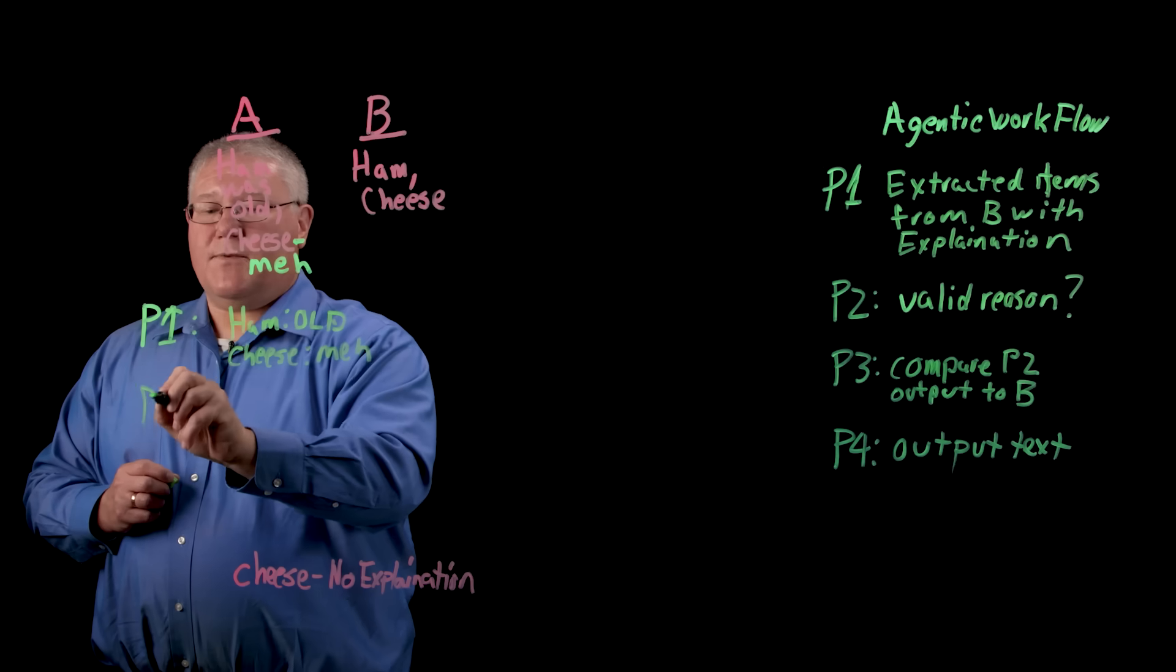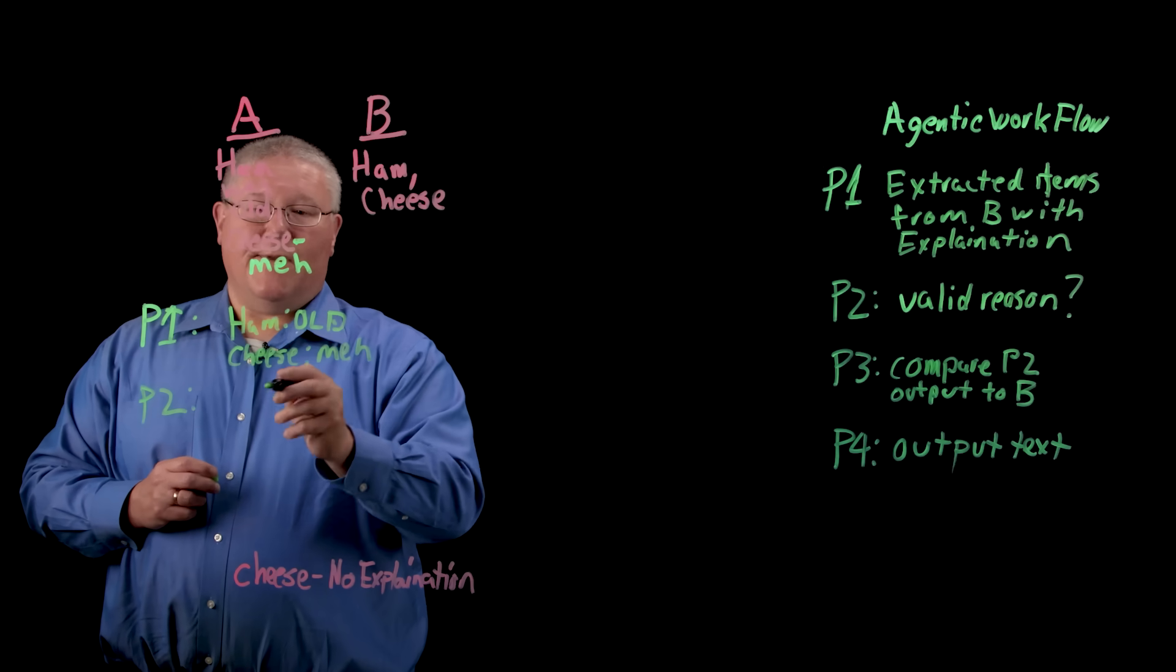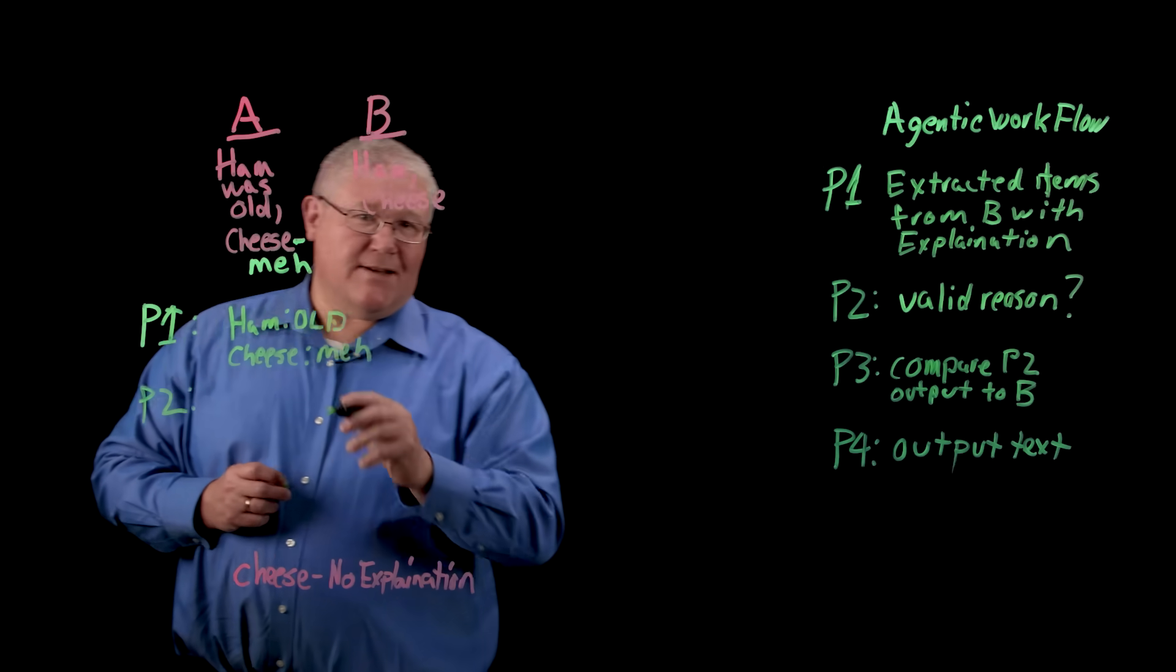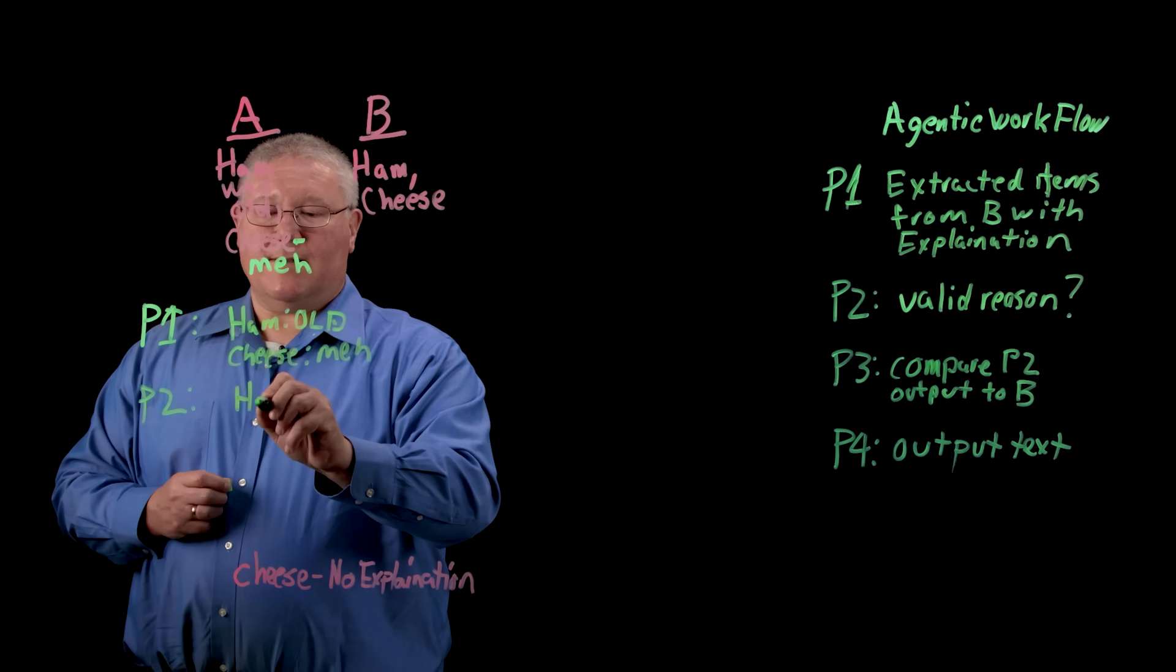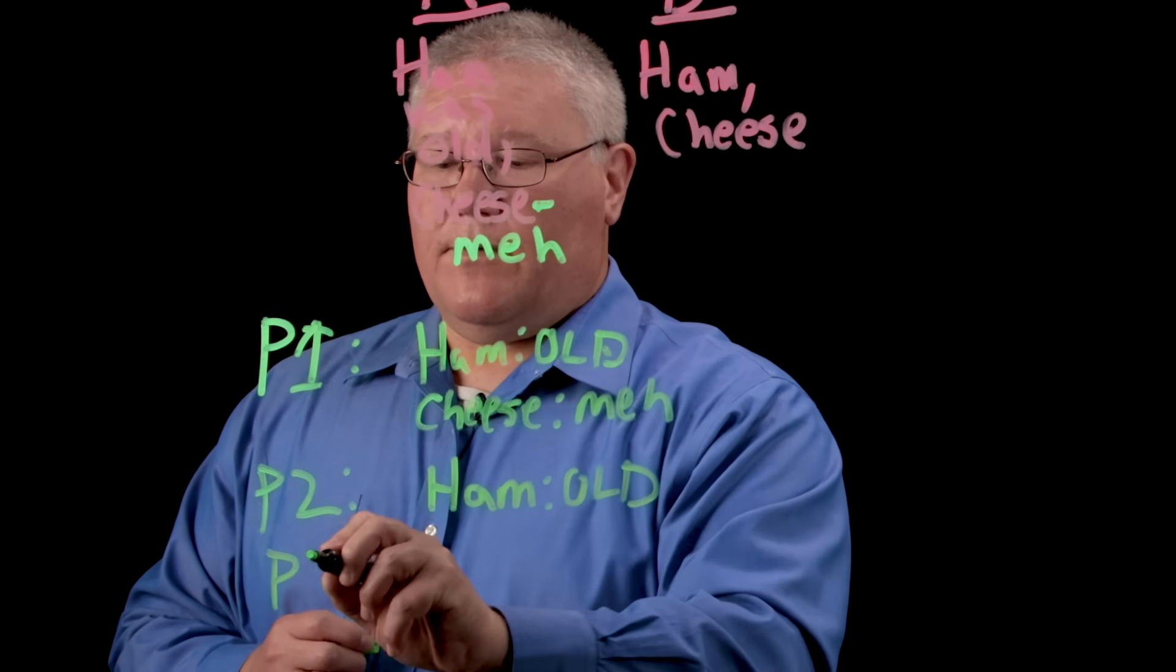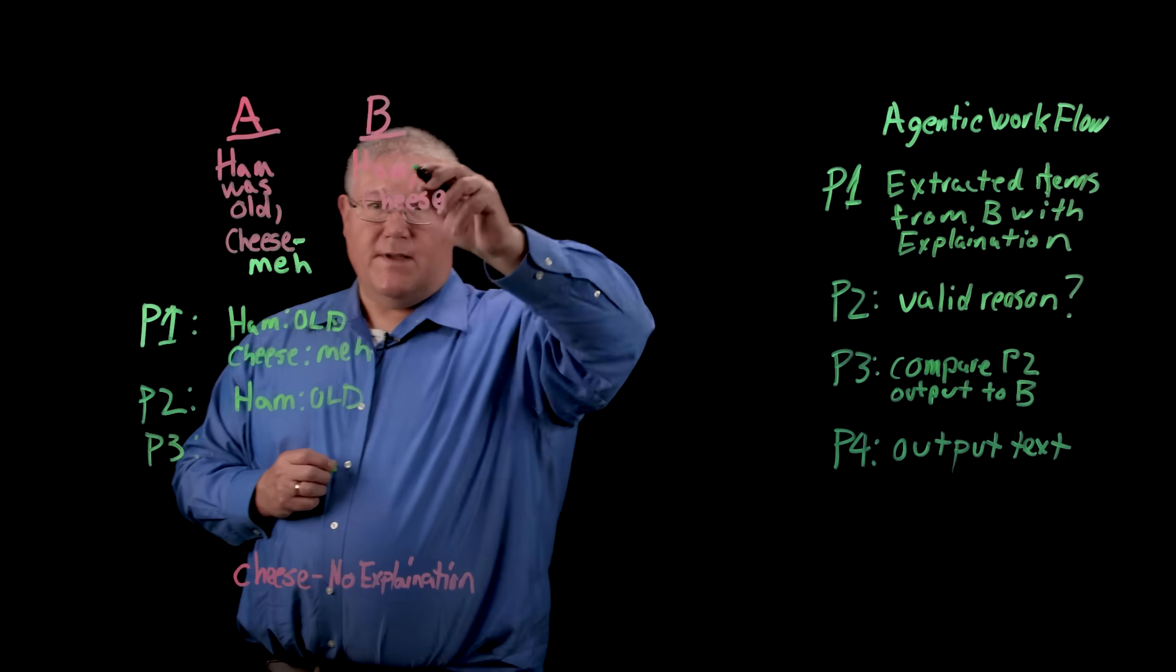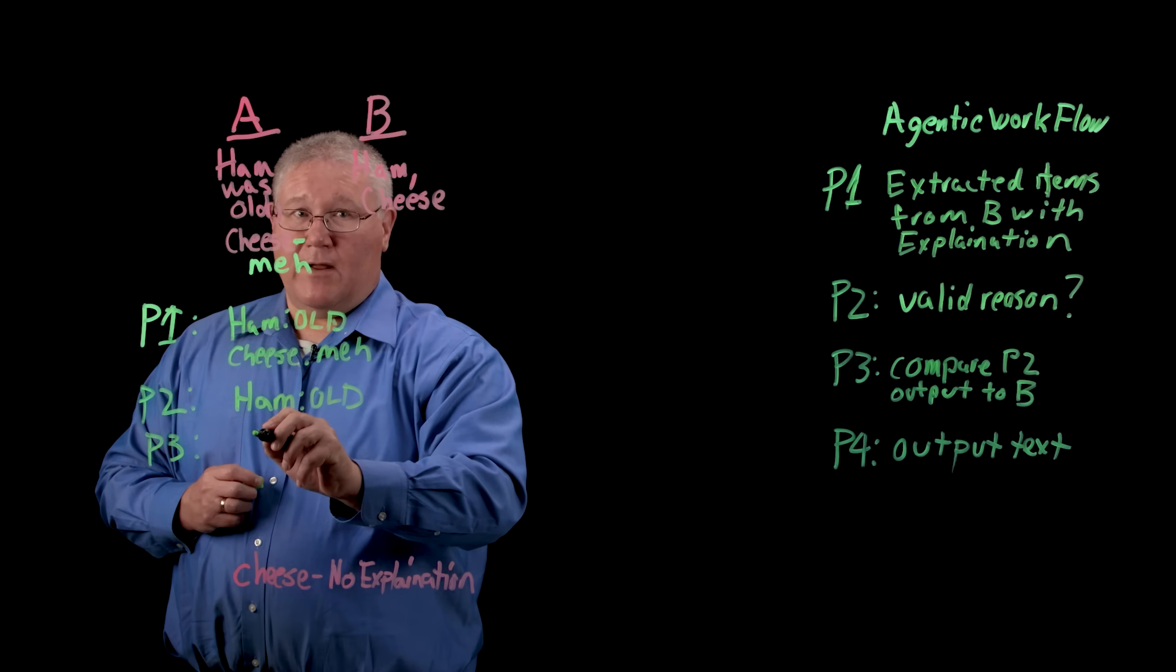The second prompt would look at this information right here and determine that meh is not really a good reason not to fill an order. So it would be something like this. The third prompt would compare this to this, and we would end up with something that looked like this.